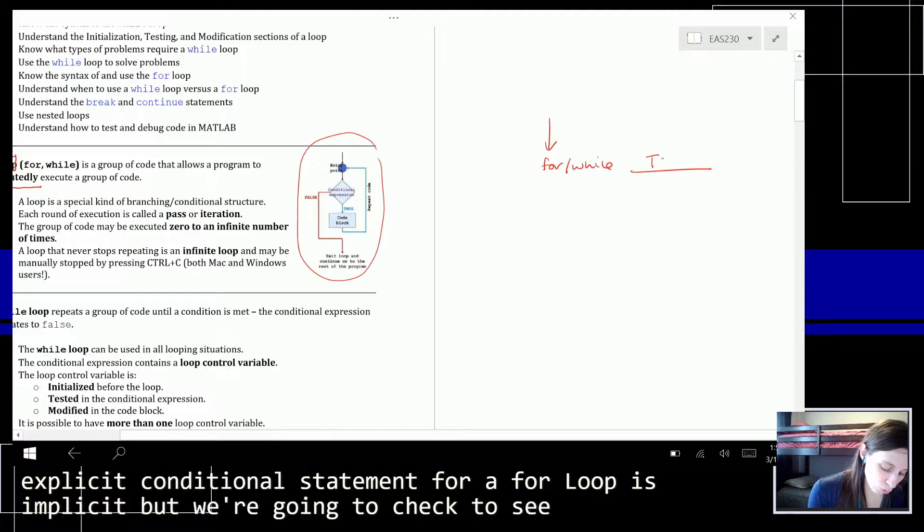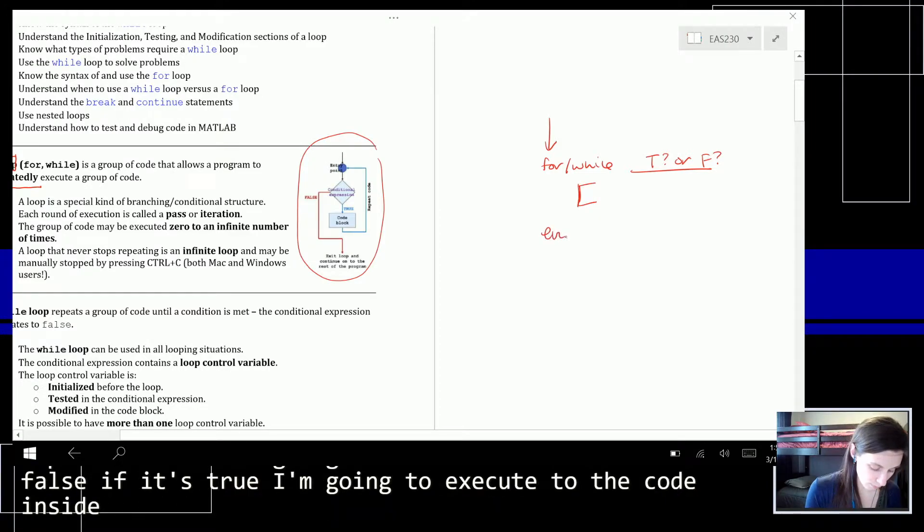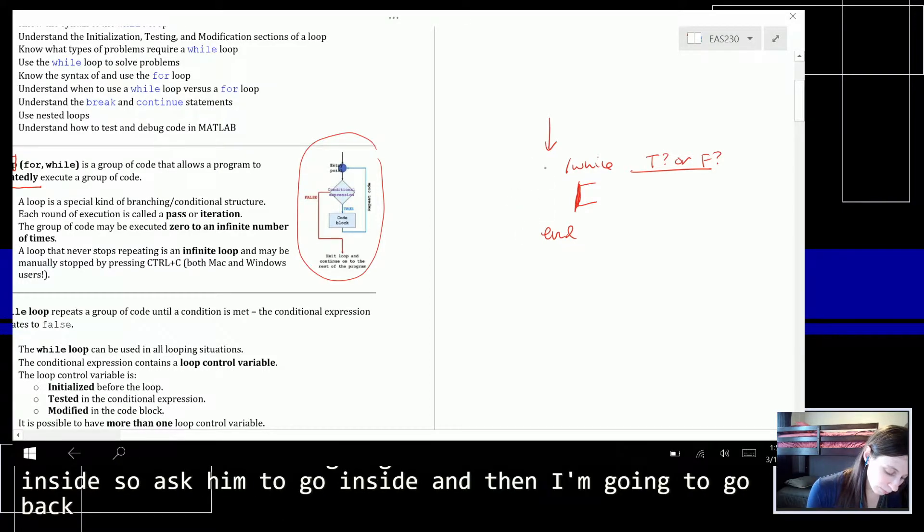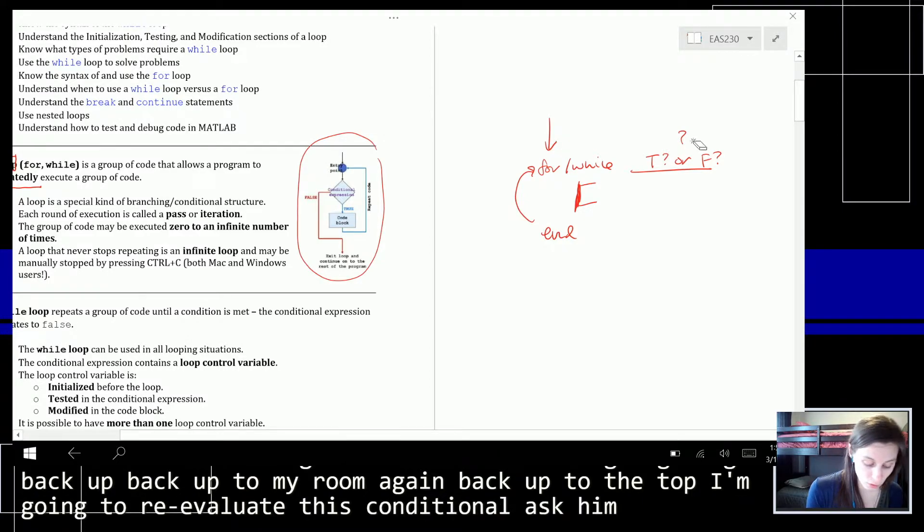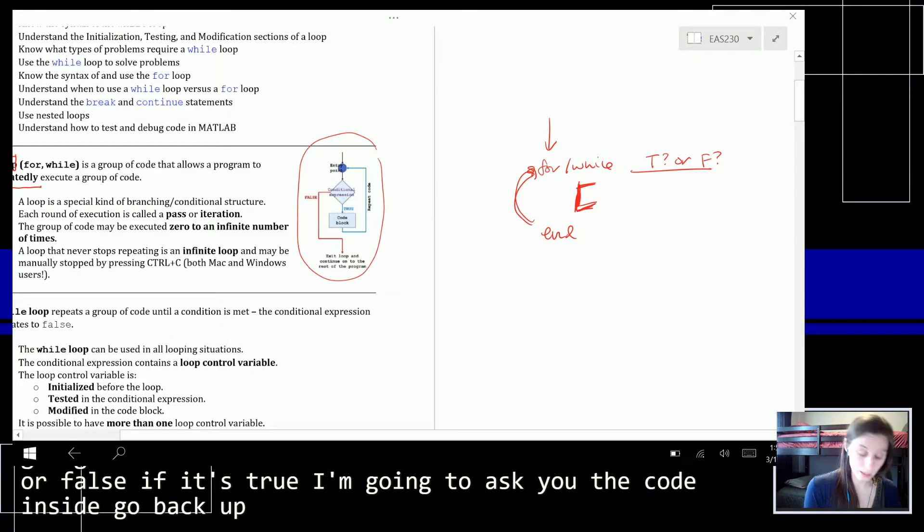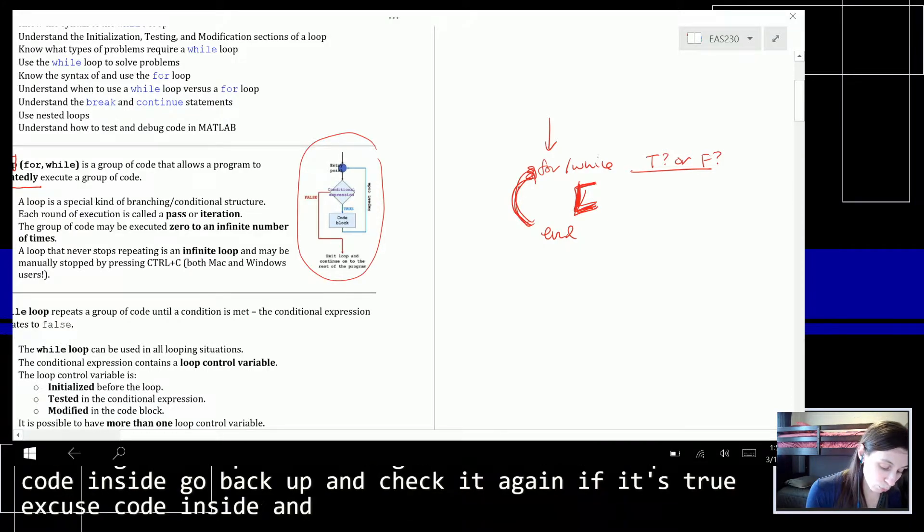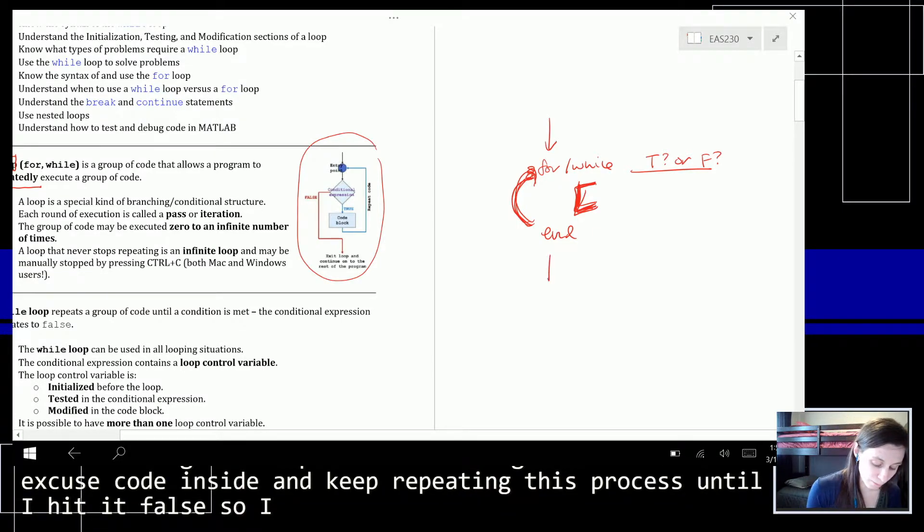We're going to check to see is it true or false. If it's true, I'm going to execute the code inside, and then I'm going to go back up to my loop again, back up to the top. I'm going to reevaluate this conditional, ask if it's true or false. If it's true, I'm going to execute the code inside, go back up, check it again. And keep repeating this process until I hit false. So as soon as it's false, I'm done and I keep going.